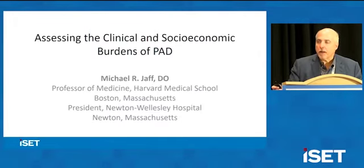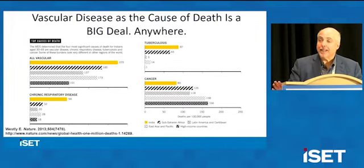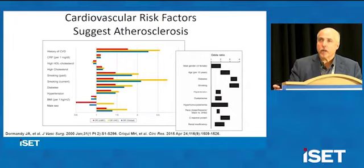And finally, to integrate the latest clinical data and guideline recommendations into comprehensive and individualized secondary preventive strategies for patients with PAD. With that as a backdrop, I was asked to discuss the clinical and socioeconomic burdens of peripheral artery disease. Everybody at this meeting understands that vascular disease as a cause of death is a big deal anywhere in the world compared to other chronic conditions. Vascular causes lead the charge as far as causes of death.